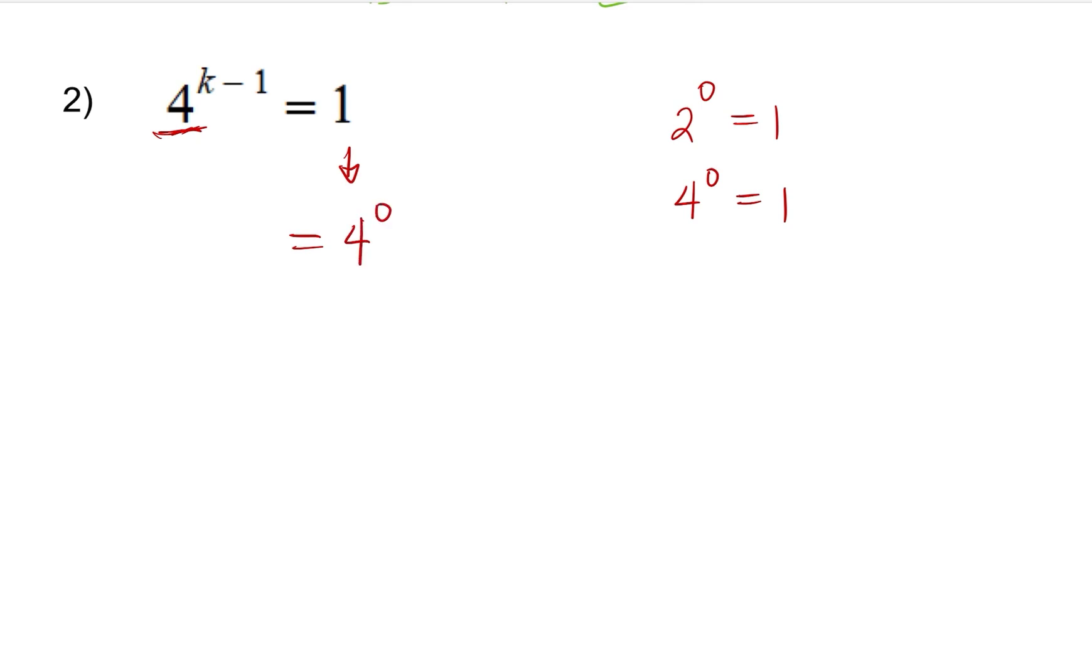We're going to drop the left-hand side, the original, 4 to the power k minus 1. And since the bases are now the same, then we will have k minus 1 equals 0, isolating k. So k is equal to positive 1. It looks difficult, but it's really not.